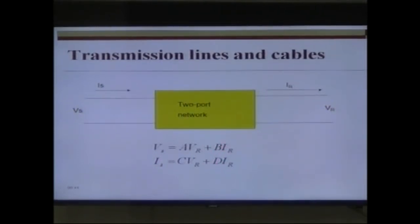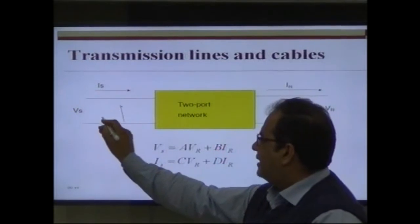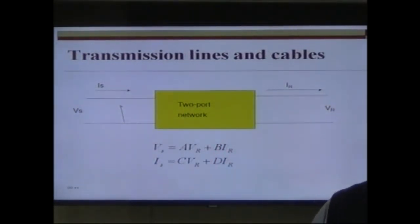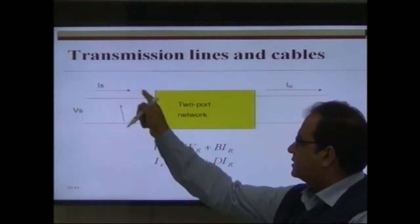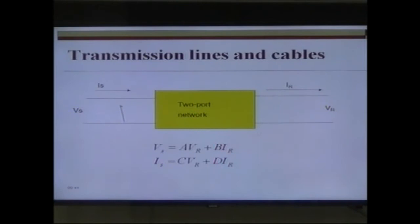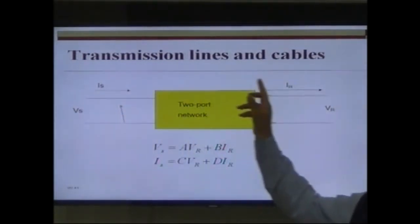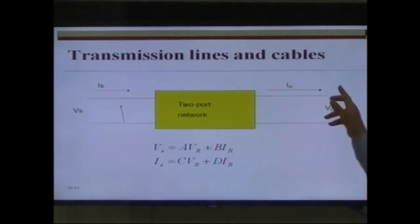If you are using a two-port network in the context of circuit analysis, in the middle you would have some complex electrical circuit with two terminals at the input and two terminals at the output. At the input terminals, the voltage is Vs and the current going into the two-port network is Is. At the output, the voltage is Vr and the current leaving is Ir. In the context of transmission lines, we call Vs and Is the sending end quantities, and Vr and Ir the receiving end quantities.